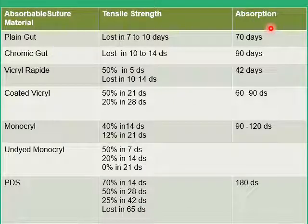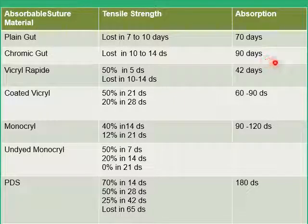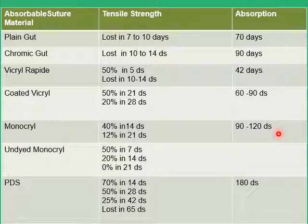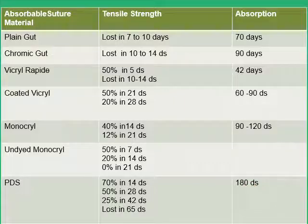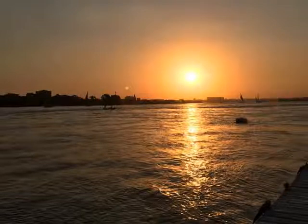When we get to the rate of absorption, it's Vicryl Rapide that is eliminated completely in six weeks. Plain gut would take ten weeks before it completely disappears from the wound. It takes three months to clear the chromic gut or Vicryl, three to four months to eliminate the Monocryl, and up to six months for PDS to be cleared completely. So we come to the end of this presentation on the absorbable surgical sutures and will proceed now to the non-absorbable surgical sutures.